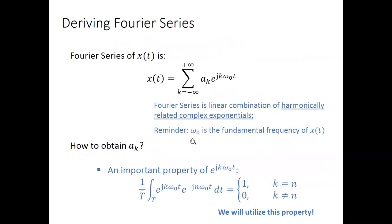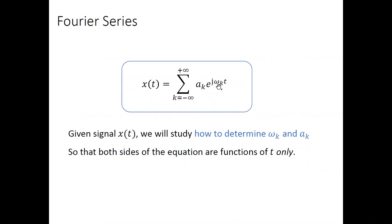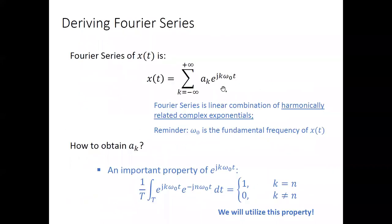Now that we've proved this property, let's apply it to our central task of calculating Fourier series. In the Fourier series, each term's frequency ω_k is replaced by kω₀ — multiples of the fundamental frequency ω₀. Our remaining task is to find the coefficient a_k for each term, and that's where we utilize the orthogonality property.